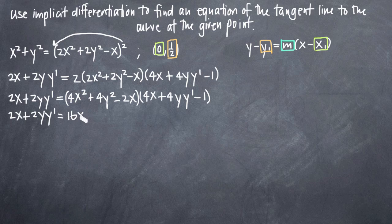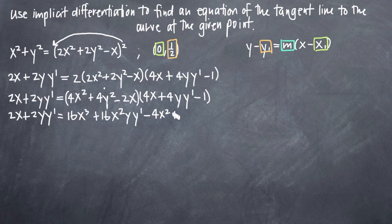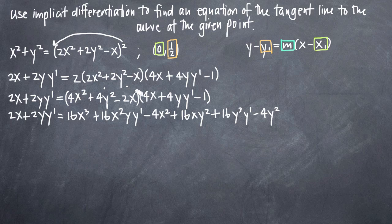Multiplying those two terms together by FOILing: 4x² times 4x gives us 16x³. 4x² times 4y·y prime gives us 16x²·y·y prime. 4x² times negative 1 gives us negative 4x². Then 4y² times 4x gives us 16x·y². 4y² times 4y·y prime gives us 16y³·y prime. 4y² times negative 1 gives us negative 4y². Then negative 2x times 4x gives negative 8x², negative 2x times 4y·y prime gives negative 8xy·y prime, and negative 2x times negative 1 gives positive 2x.